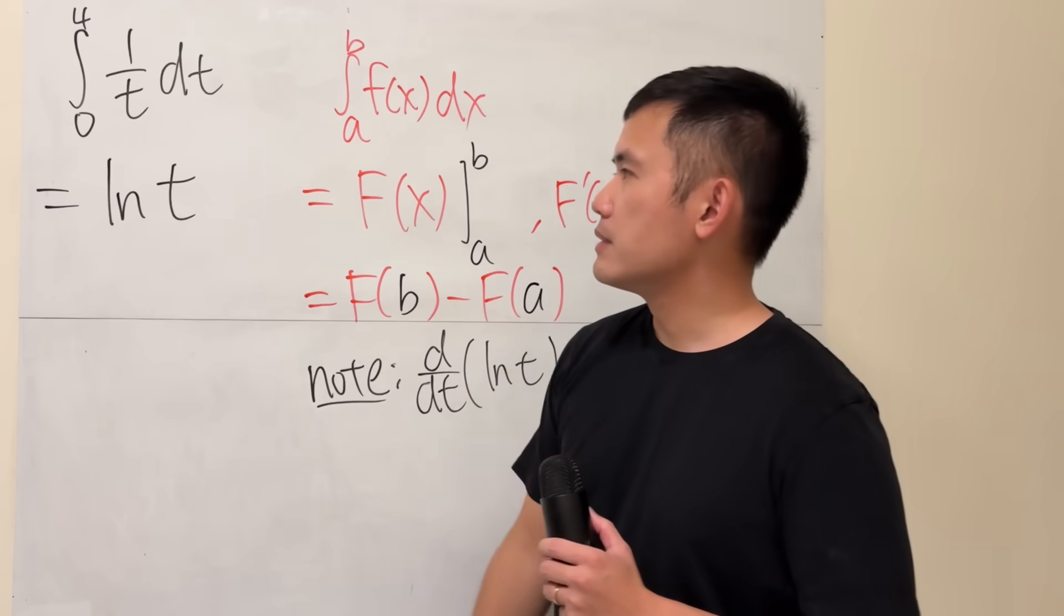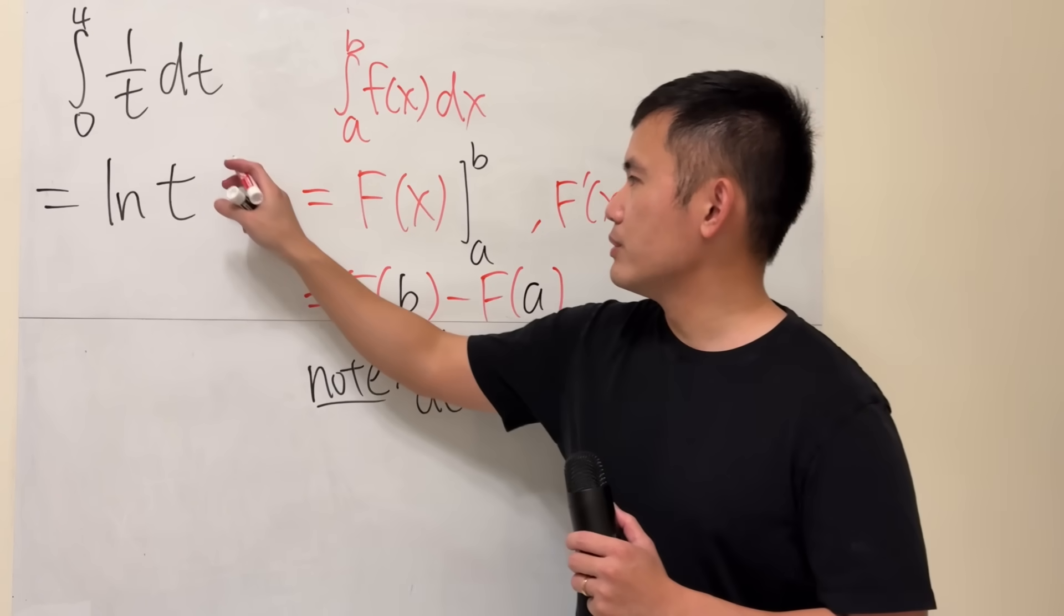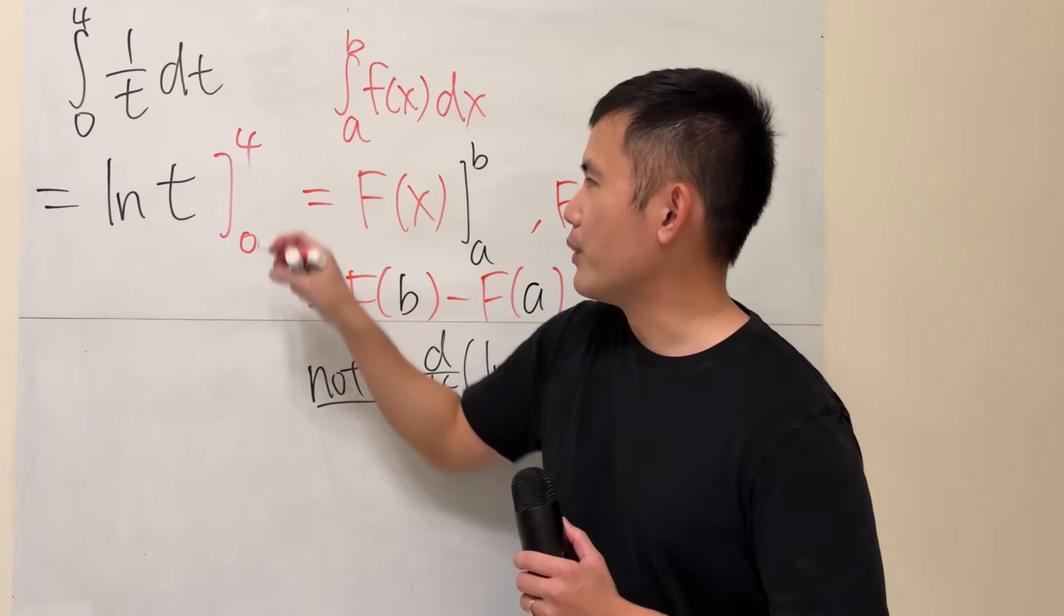So step 1, you get ln t, and then we will have to plug in numbers, 0 and 4.